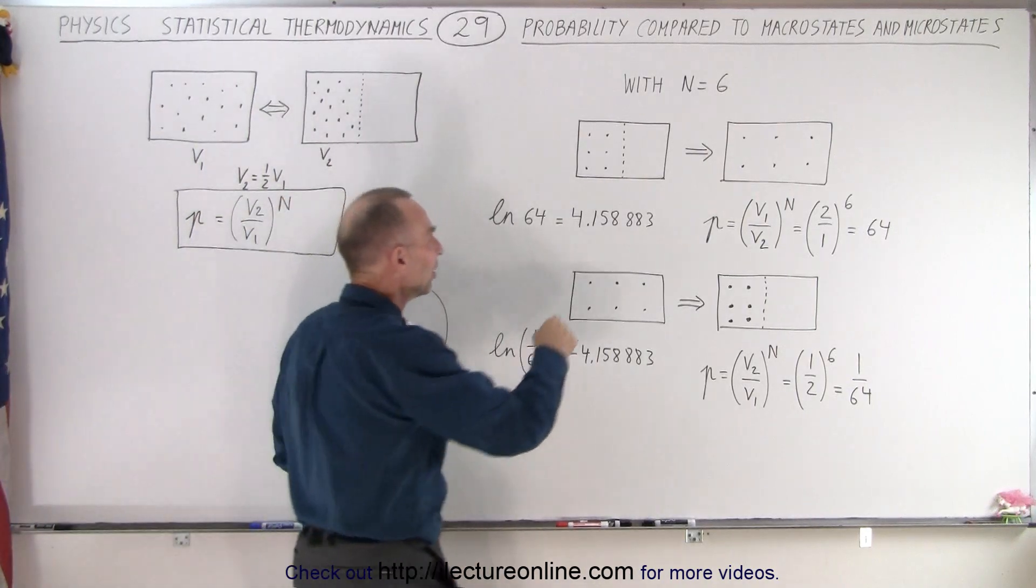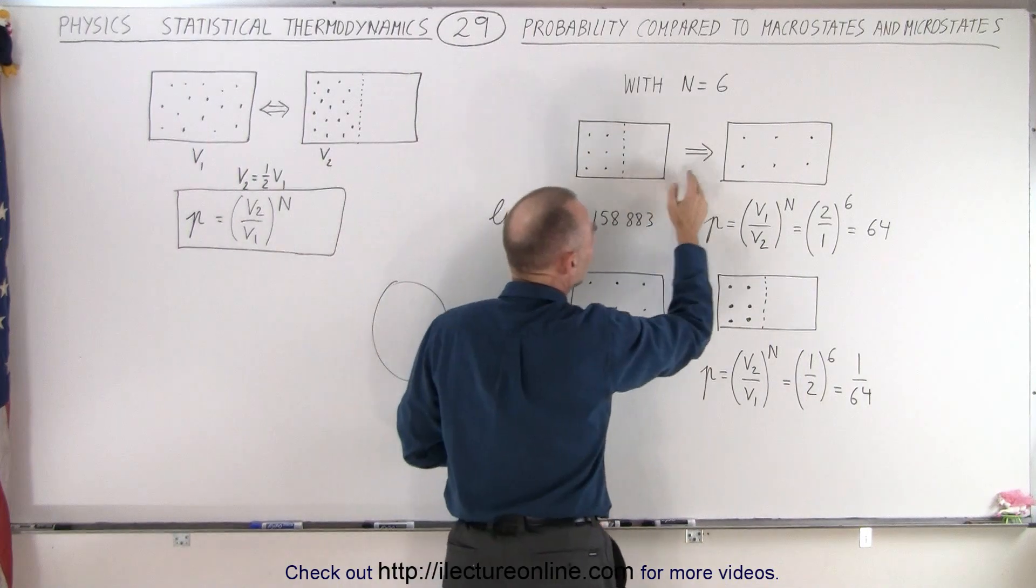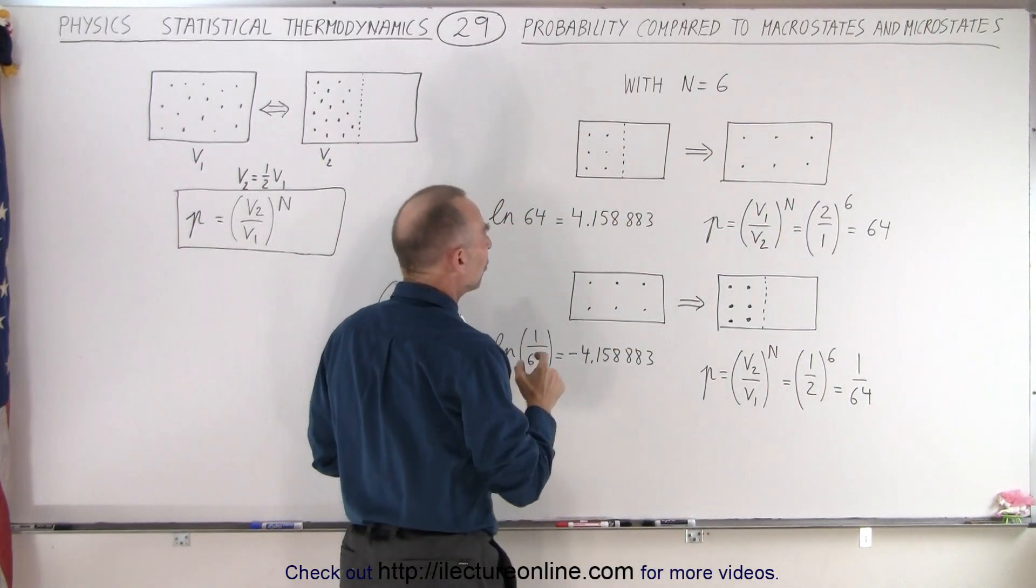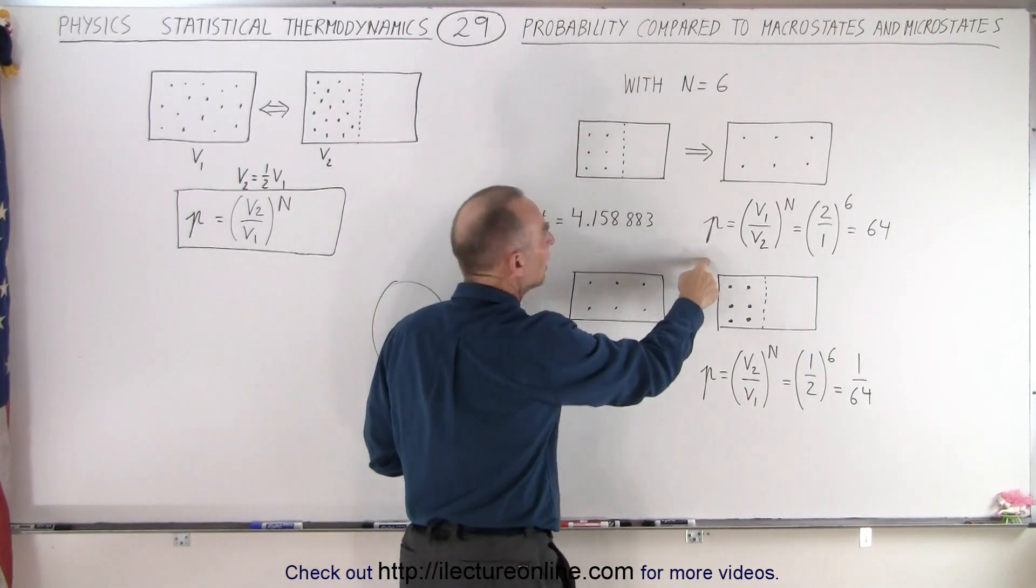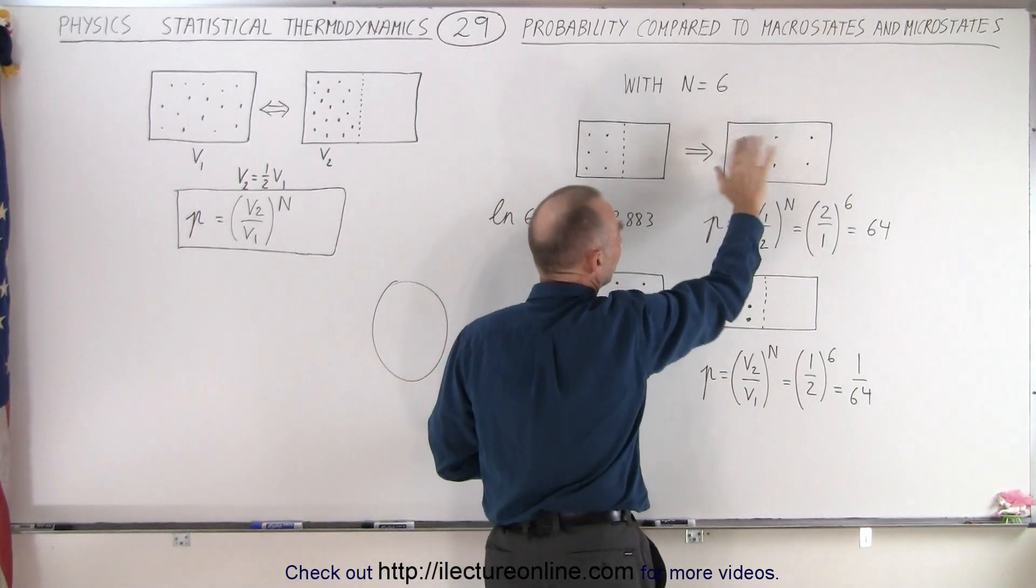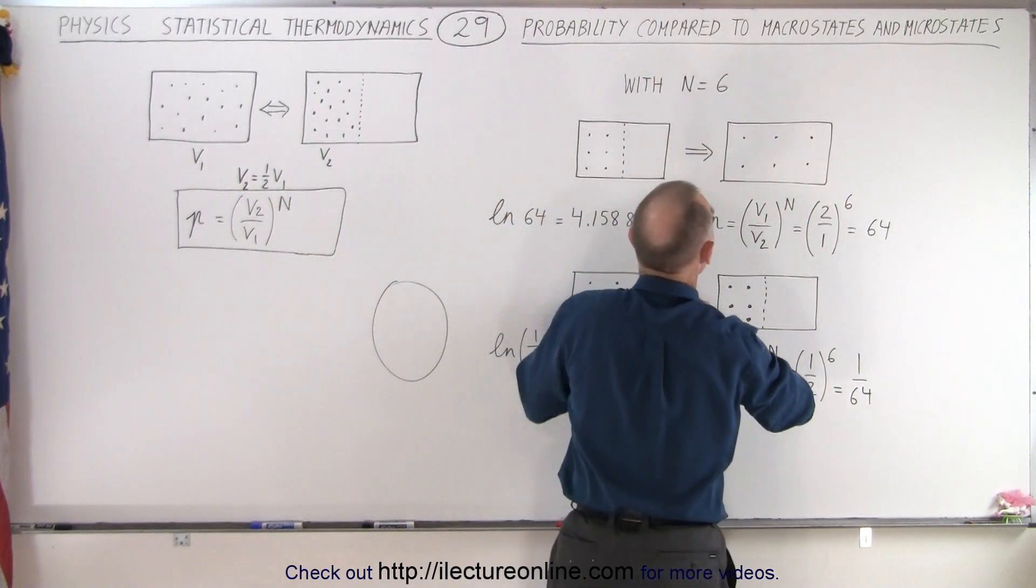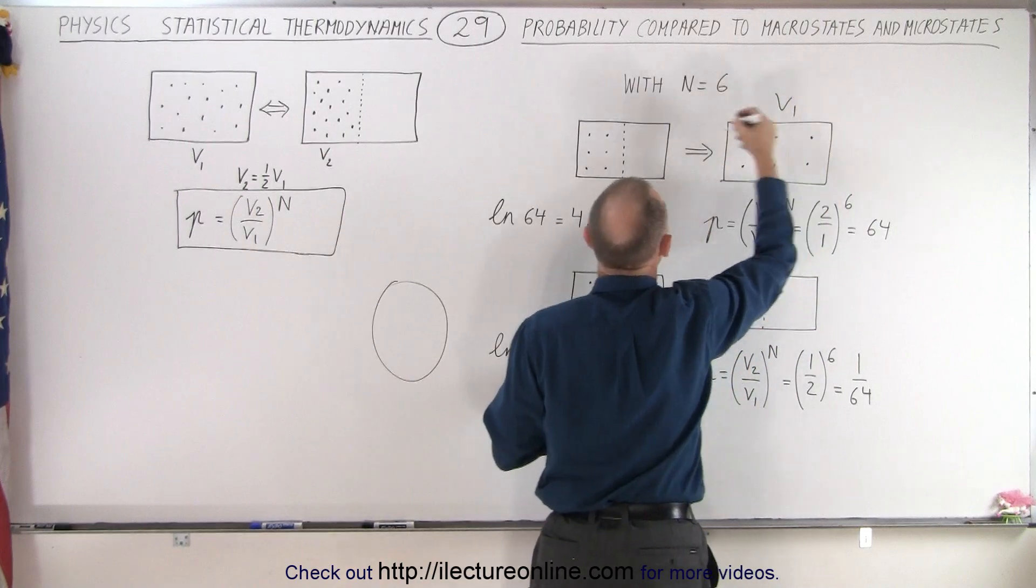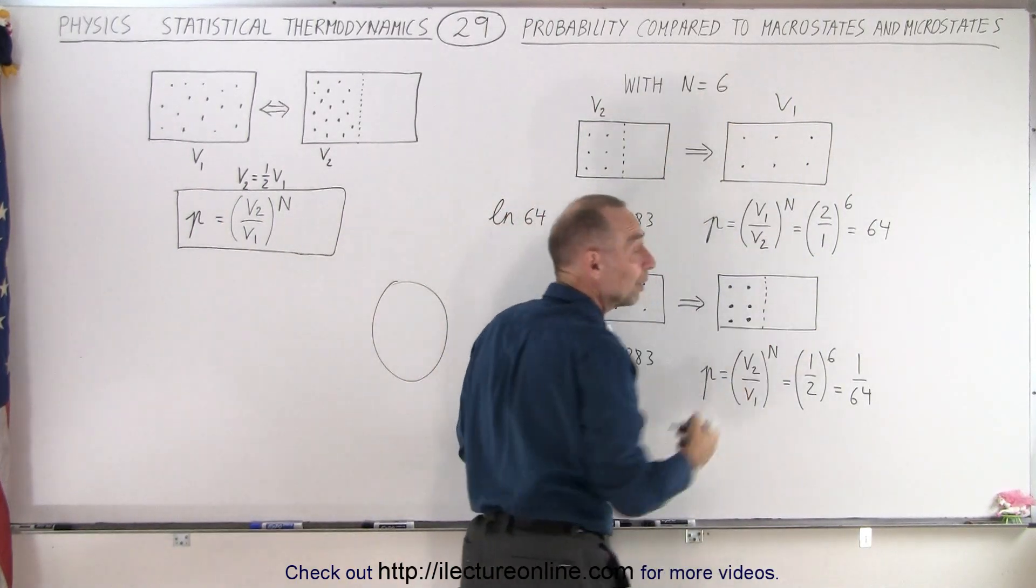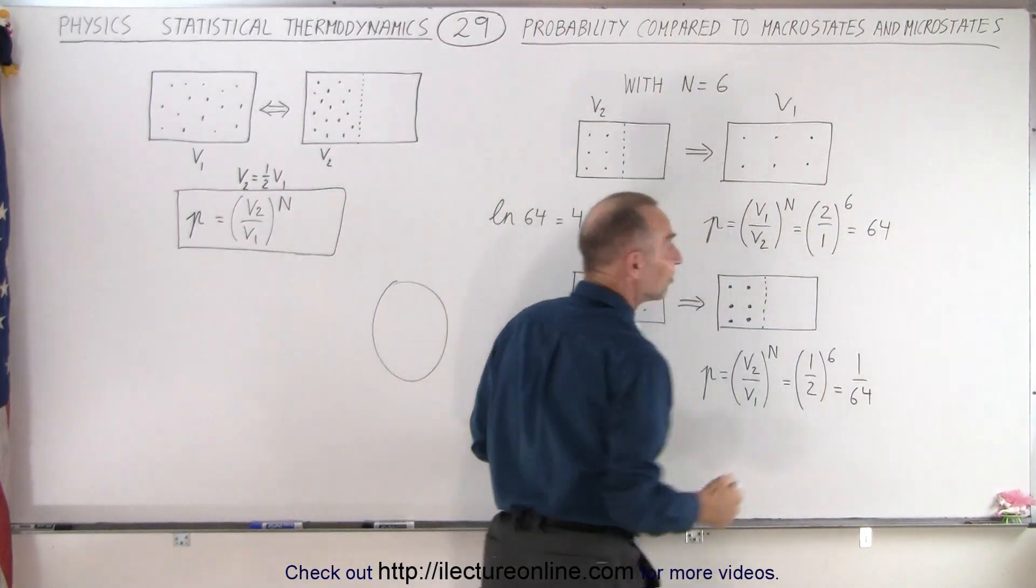And so let's say that we have six molecules on one side of the box. What is the probability for them to then be distributed throughout the entire box? And so when you then take a look at the probability, we take the ratio of the volumes. So in this case, V1 is the whole box, V2 is the half box. V1 is the full box and then V2 is just half a box. So that ratio is a 2 to 1 ratio. With six molecules, 2 to 1 to the 6th power is 64.